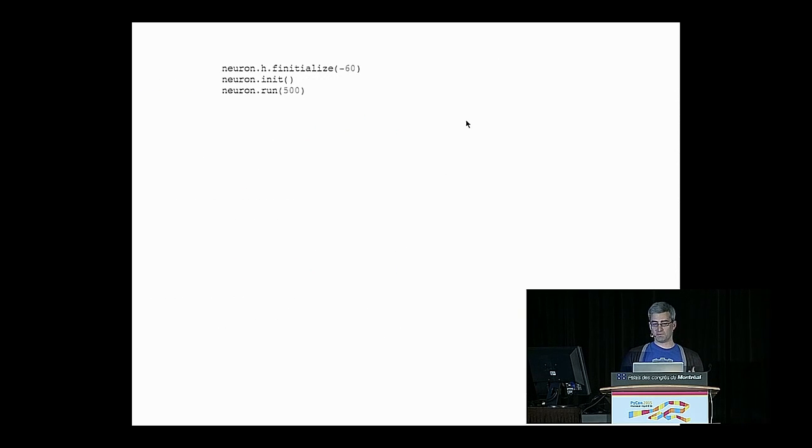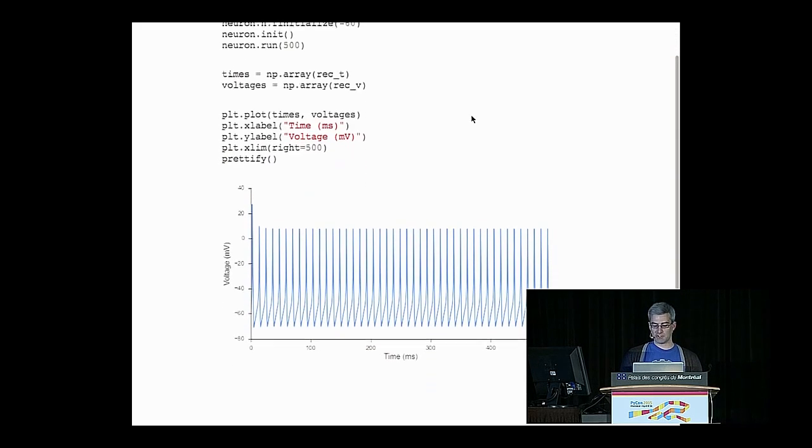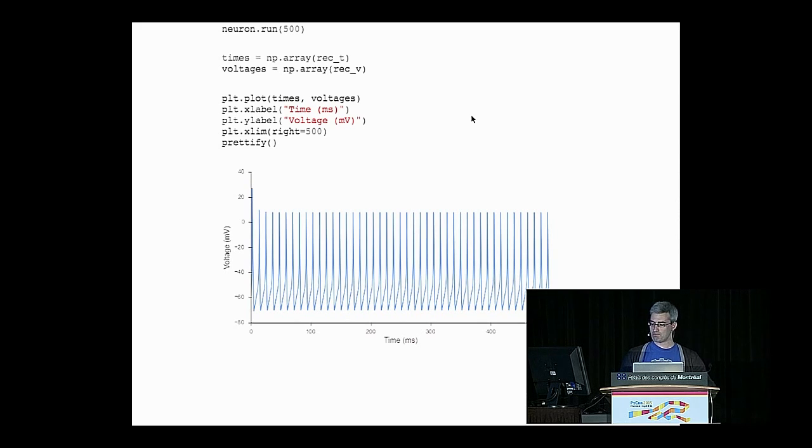So we can initialize the voltage in this cell and then run it for 500 milliseconds. We can take the time and the voltage and put them into NumPy arrays and then use matplotlib to create a plot of that membrane voltage over time. So in this 500 millisecond window, it spikes quite a bit. There's a lot of information being transmitted from this cell to its downstream cells.